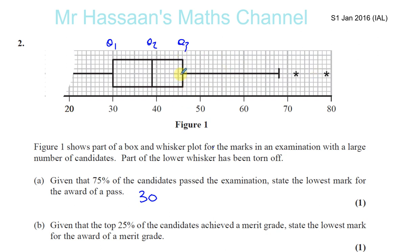And the upper quartile, we can see here, is going to be, that's 45, 46. 46 is the mark for the award of a merit grade.